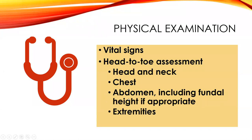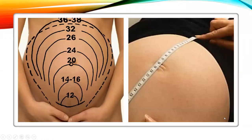During the physical exam we get vital signs, a head-to-toe assessment, look at the abdomen including fundal height if appropriate, and check the extremities for swelling. Measuring fundal height goes from the symphysis pubis at the top of the pubic bone all the way up to the fundus, the top of the uterus. This begins to tell us how many weeks along she is, though it doesn't work well until the uterus gets out of the pelvis into the abdomen, around 20 weeks.